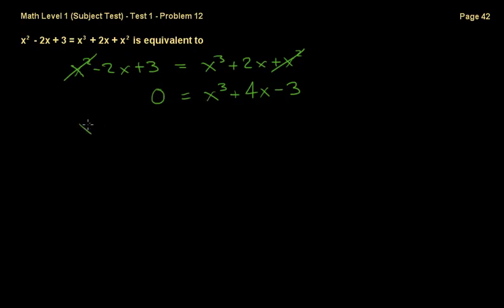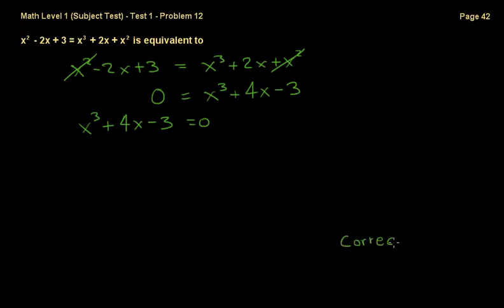Now let me write this in a more intuitive way: x cubed plus 4x minus 3 is equal to 0. So the correct answer to this question is E.